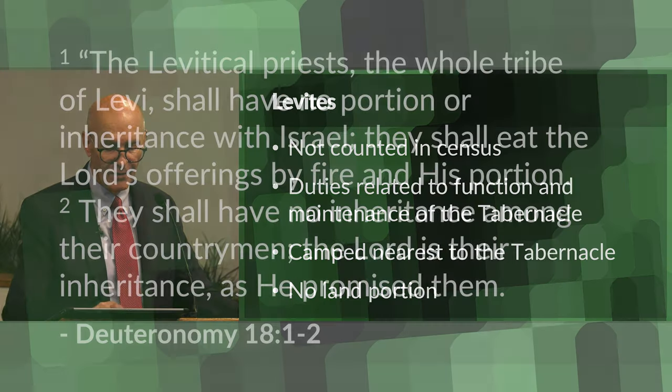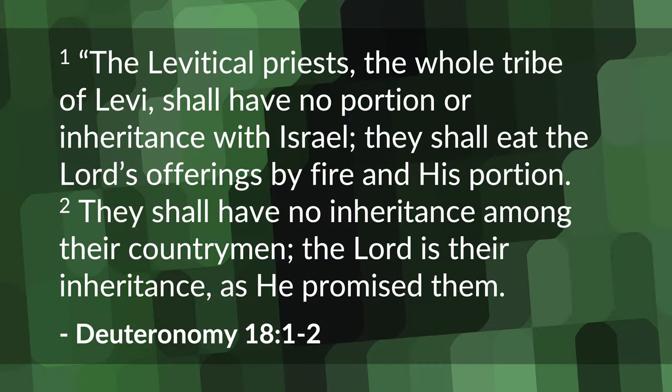A verse from Deuteronomy explains further: 'The Levitical priests, the whole tribe of Levi, shall have no portion or inheritance with Israel. They shall eat the Lord's offerings by fire and his portion. They shall have no inheritance among their countrymen. The Lord is their inheritance as he promised them.' — Deuteronomy chapter 18, verses one and two.